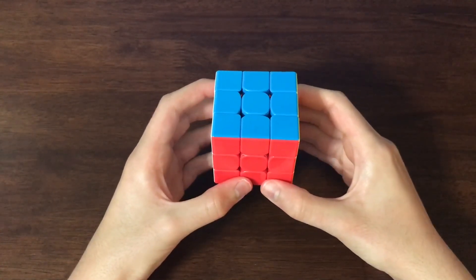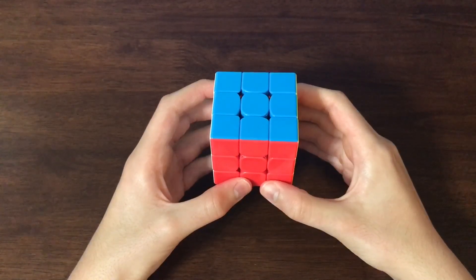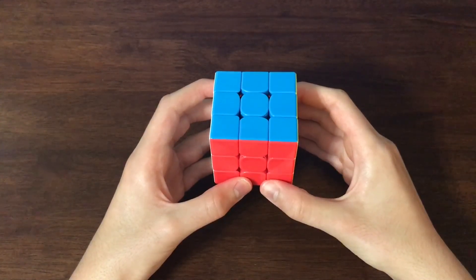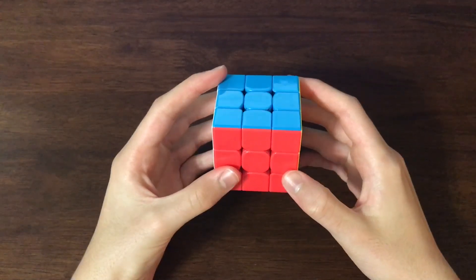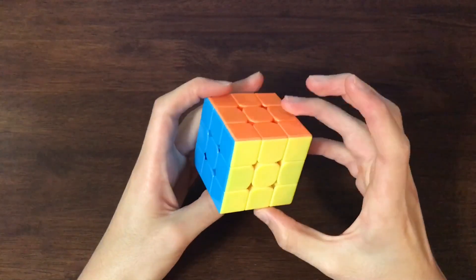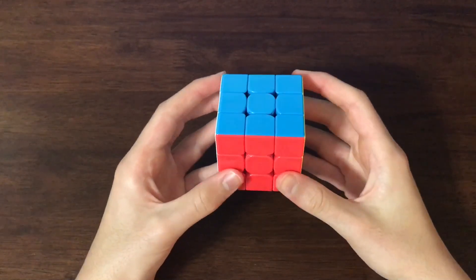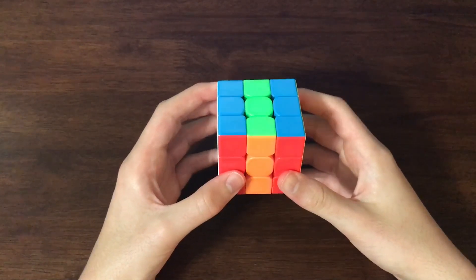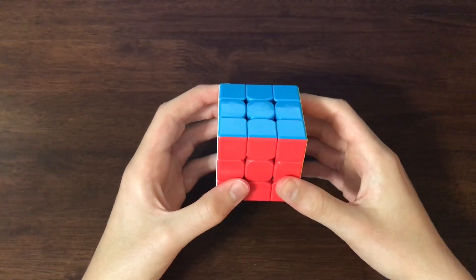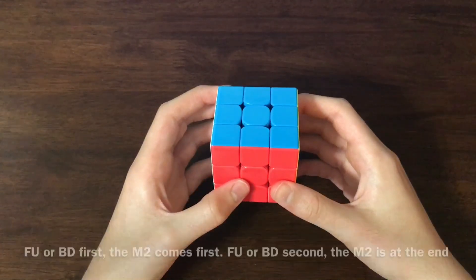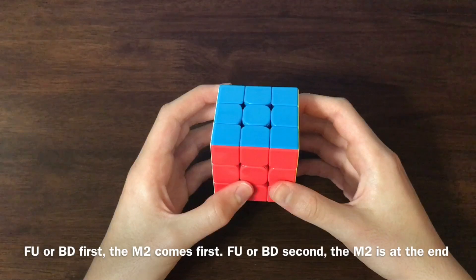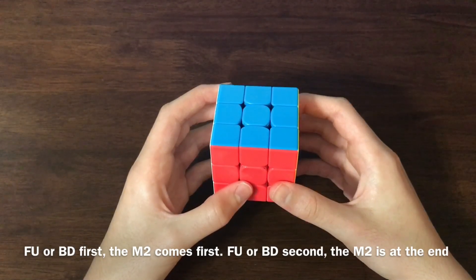Now, that chart may seem a little bit confusing, but I'm going to show it to you again so that you can see some of the similarities and sort of patterns you can look at to try to remember what order to do the M moves. So, probably the most helpful thing to remember is that if you have FU or BD as the first target, that means that you have to start with an M2 and then do M prime, M prime, or MM, depending on which one. If the targets you have to do have BD or FU as the second target, that means that you have to do M2 at the end. So, if FU or BD comes first, the M2 comes first, but if FU or BD comes last, then the M2 comes last.